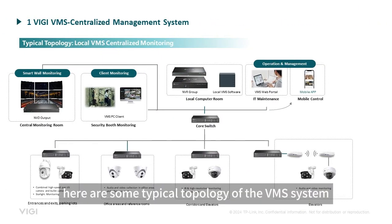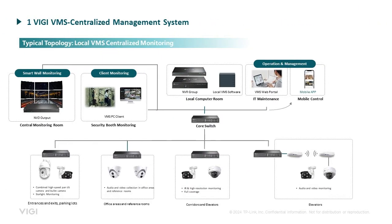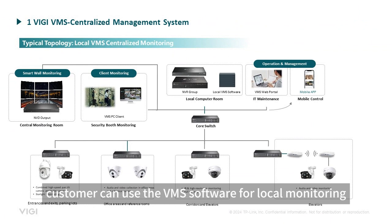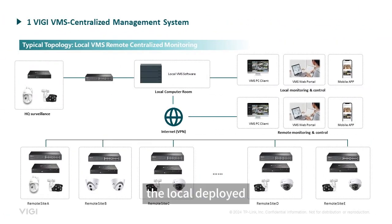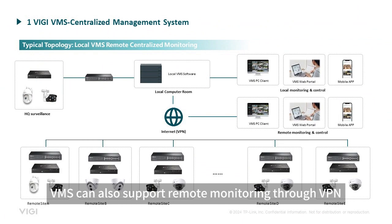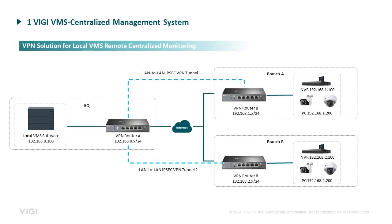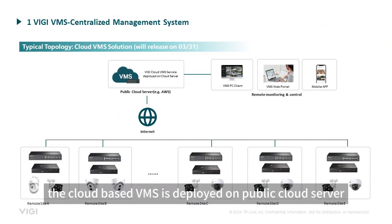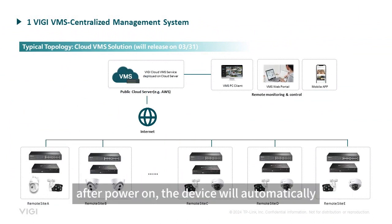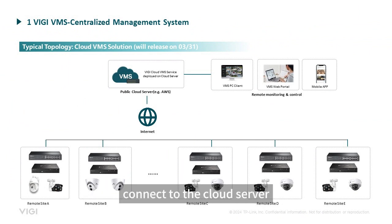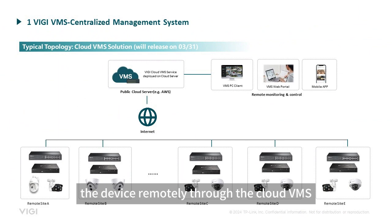Here are some typical topologies of the VMS system. Customers can use the VMS software for local monitoring. The locally deployed VMS can also support remote monitoring through VPN, and here is the VPN network design. The cloud-based VMS is deployed on public cloud servers like AWS. After powering on, the device will automatically connect to the cloud server and customers can control the device remotely through the cloud VMS.